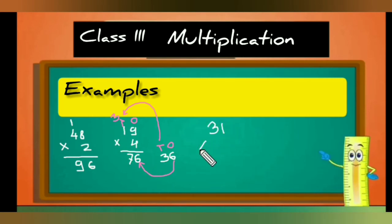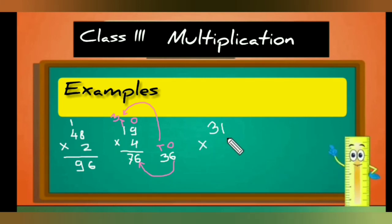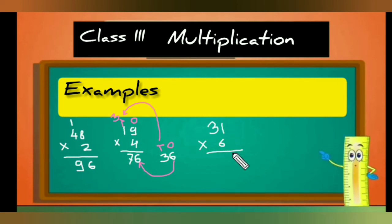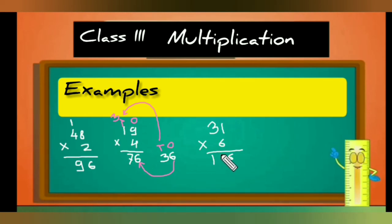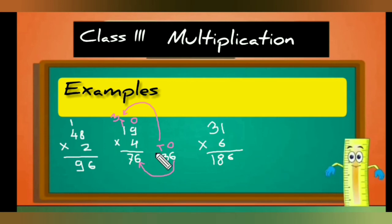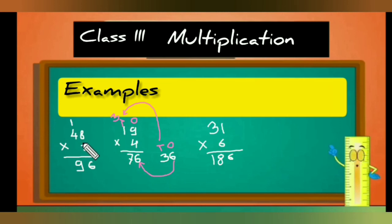Now see: 31 multiplied by 6. Six multiplied by 1 — six 1s are 6. Three multiplied by 6 — six 3s are 18. So the answer is 186. This is how we do multiplication.